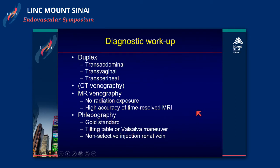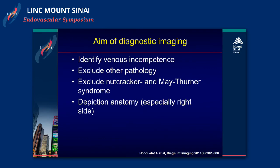Therefore, it's very important to perform a good diagnostic workup. Use duplex transabdominal, transvaginal, or transperineal in order to demonstrate the reflux. Then use CT or MR venography. MR venography has the advantage of no radiation exposure, especially in this young group of patients typically affected by the disease, and it has very high accuracy when you use time-resolved MR. Phlebography is still the gold standard. Use a tilting table or the Valsalva maneuver, and perform a non-selective injection into the renal vein rather than going directly into the ovarian vein itself.